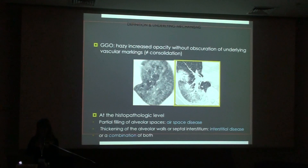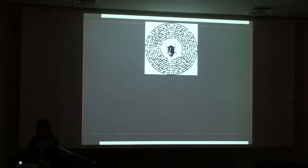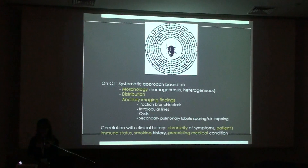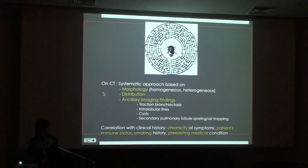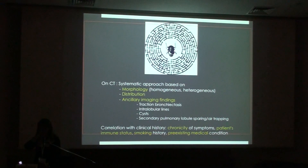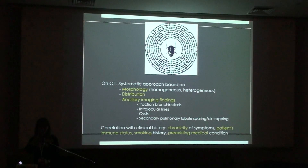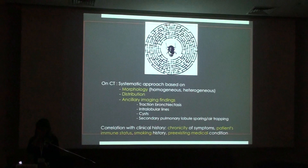This is why it is difficult. I suggest having a systematic approach based on the morphology — is it homogeneous or heterogeneous ground glass — the distribution, and checking for ancillary findings such as traction bronchiectasis, intralobular lines, cysts, and sparing of the secondary pulmonary lobule. It's also very important to correlate our findings with the clinical history: are the symptoms chronic or acute, what is the patient's immune status, smoking history, and pre-existing medical condition.